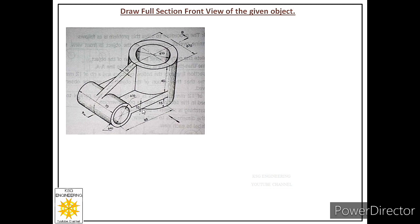In order to draw its front view as a full section, we have to cut this object with an imaginary cutting plane along this center line or along its length. When we cut this object along this center line, we will get two equal parts — a front half and a back half. After cutting, we remove the front half portion and draw the orthographic image of the remaining portion, which is called the full section front view.